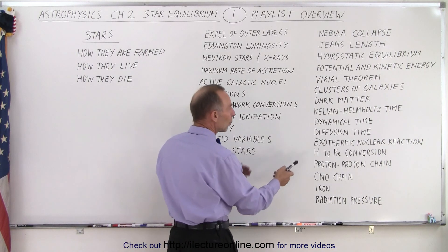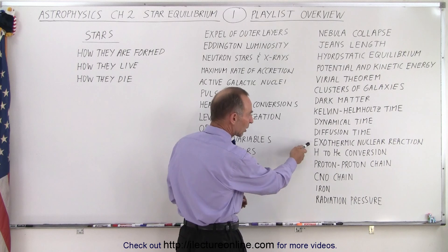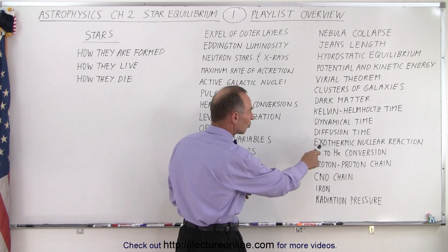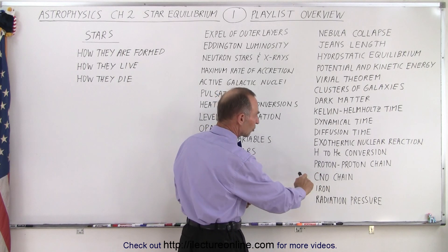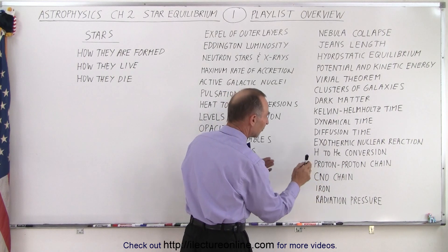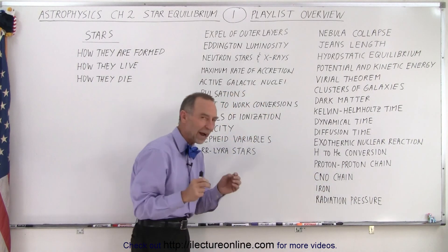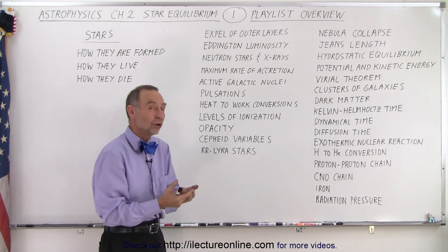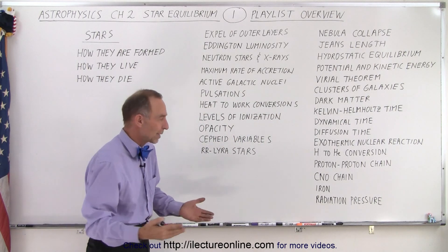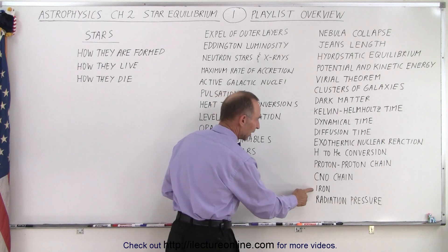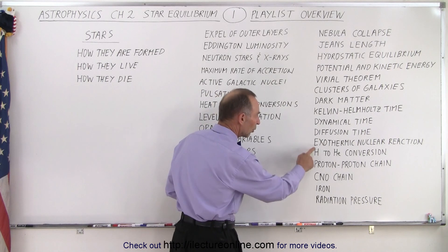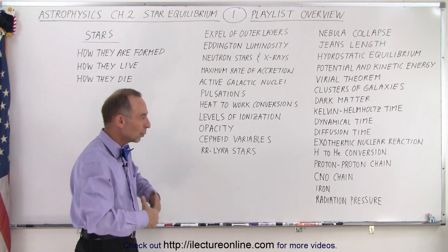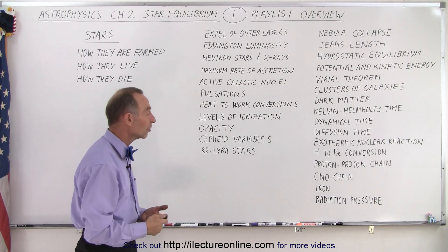Then we'll talk about what actually happens inside stars — the exothermic nuclear reaction, the hydrogen to helium conversion, the proton-proton chain, the CNO chain, and eventually iron. Iron is the element beyond which you can no longer fuse and have an exothermic reaction, so it's the last element that can be formed by exothermic nuclear reaction.